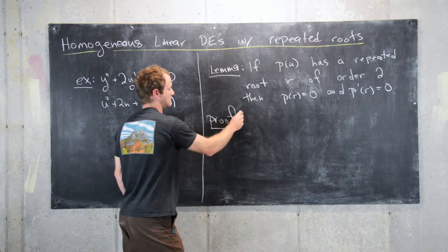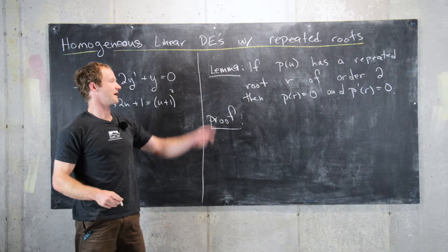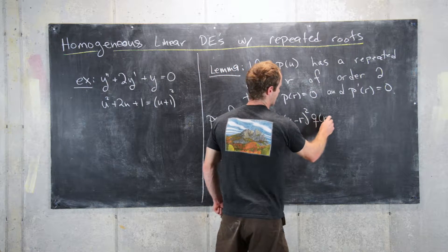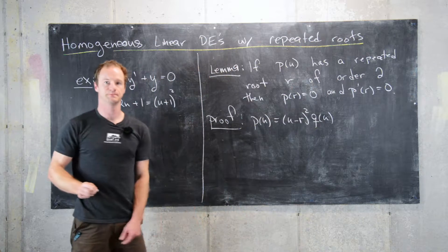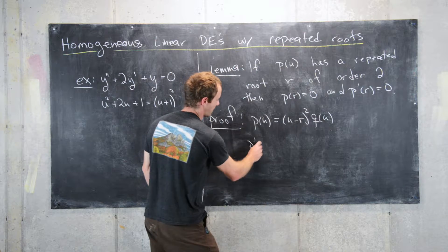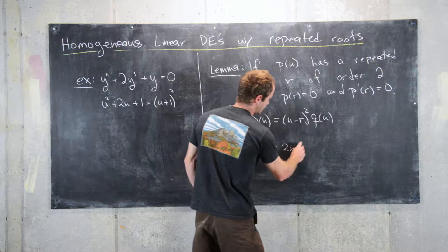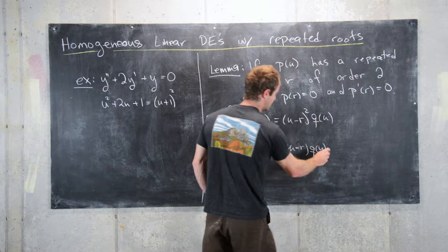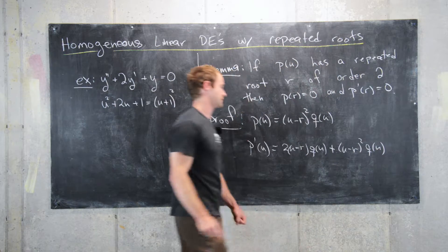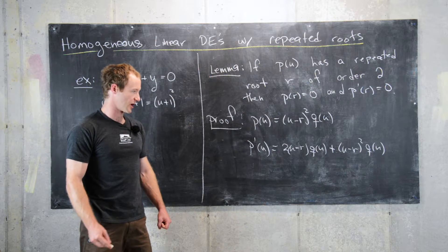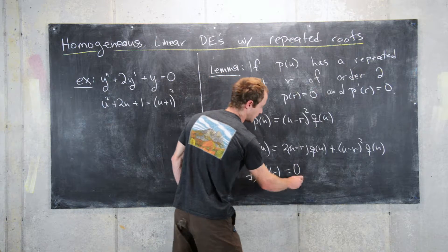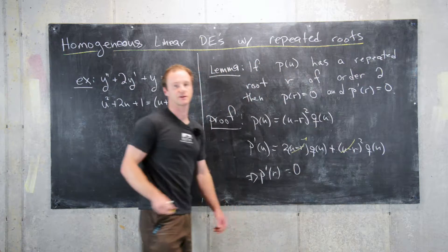We can prove that pretty easily. So, if it has a repeated root, then that means we can factor (u minus r) squared out and we have a polynomial q of u left over. We already know that p evaluated at r is equal to 0. Then, p prime of u will be 2(u minus r) times q of u plus (u minus r) squared times q prime of u, by the product rule. It immediately follows that if we plug in r, we get 0 — this term will cancel off and that term will also cancel off.